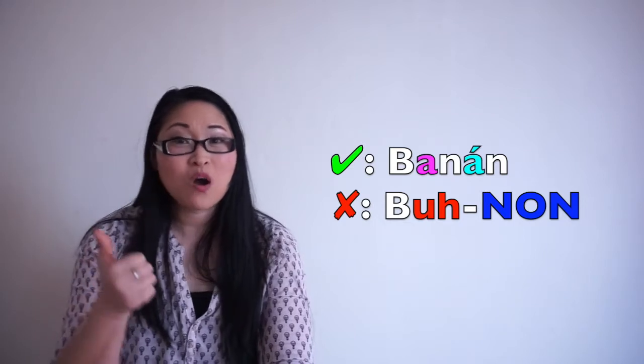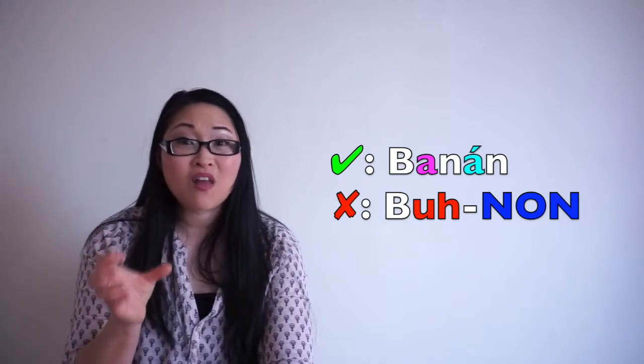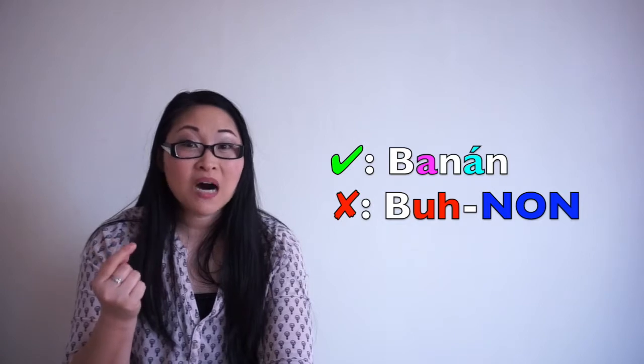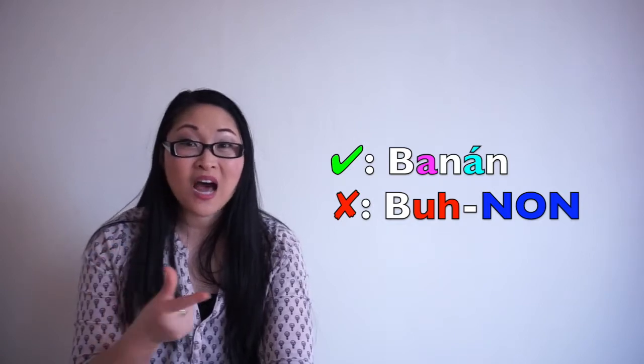So number one, it's wrong because the second syllable is not long enough. Number two, it's wrong because I said ba-nan. I didn't say ba-nan. So that's another reason why we need to be very vigilant about this.